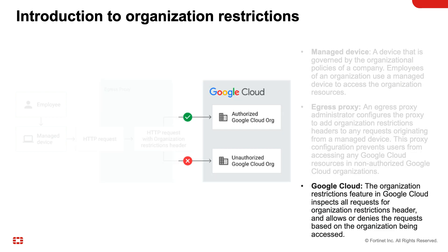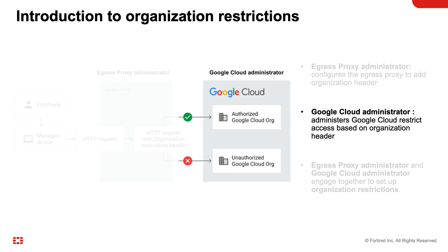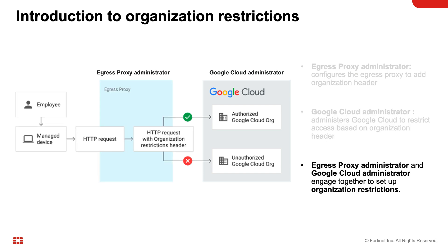The organization restriction feature within Google Cloud inspects all requests for the organization restriction header and allows requests based on the organization being accessed. To set up organization restrictions, the egress proxy administrator configures the egress proxy to add the organization header. Next, the Google Cloud administrator configures IAM to govern access to resources based on the organization header. The egress proxy admin and Google Cloud admin need to work together to ensure the right organization has the proper restrictions applied.